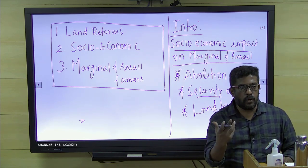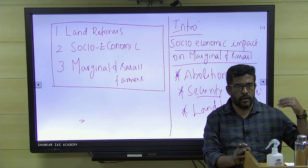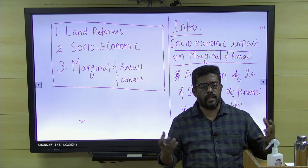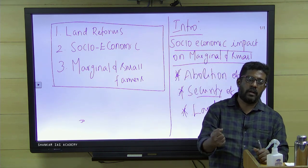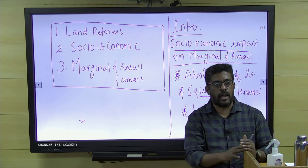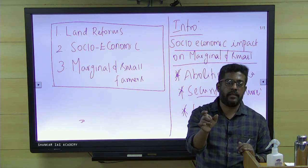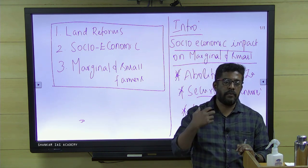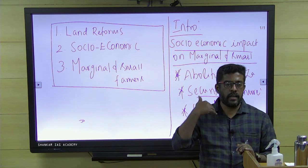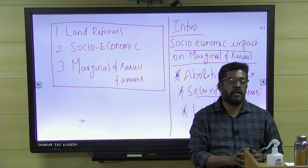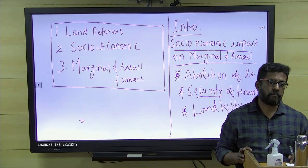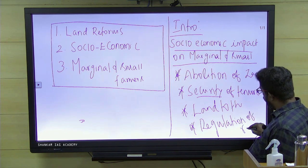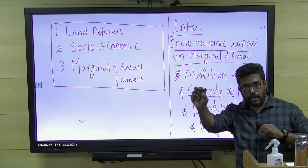Land reforms also had a component called regulation of rent. During the British period, Zamindars charged exorbitant rents — rack renting — so whatever the farmers earned, they had to share with the Zamindars. With the process of regulation of rent, rents were regulated to one-fourth, one-fifth, or one-third of the produce. Because of that, farmers were able to make decent returns on their investments in agriculture, which improved the socio-economic conditions of marginal and small farmers.